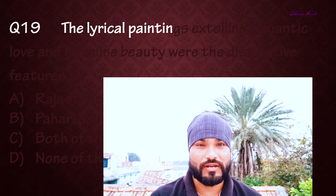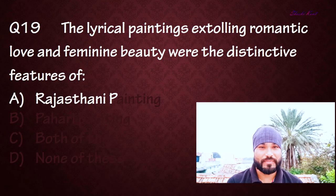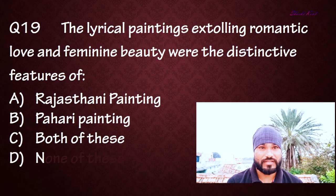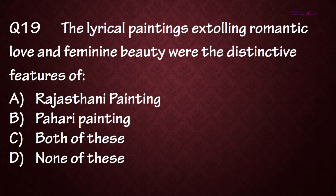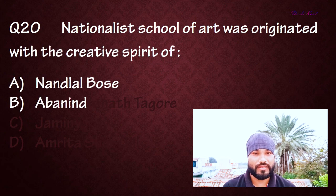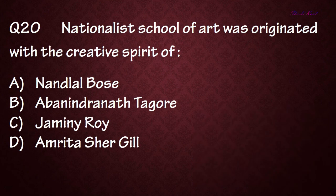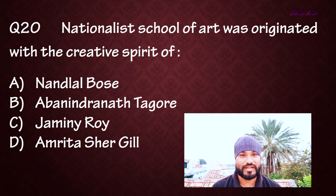Question number nineteen: The lyrical paintings extolling romantic love and feminine beauty were the distinctive features of — Option A: Rajasthani paintings, Option B: Pahari paintings, Option C: Both of these. Question number twenty: The Nationalist School of Art was originated with the creative spirit of — Option A: Dindayal Bose, Option B: Abanindranath Tagore, Option C: Jamini Roy, Option D: Amrita Sher-Gil. The correct answer is B: Abanindranath Tagore.